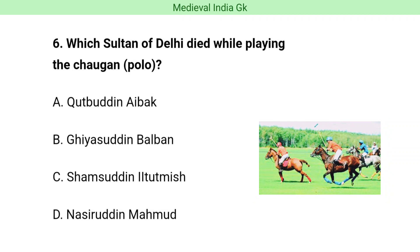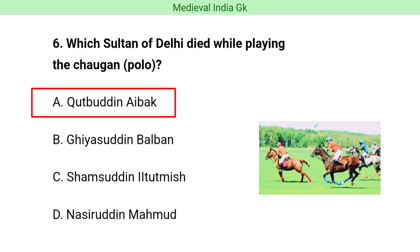Question number six. Which Sultan of Delhi died while playing the Chogan polo? The correct answer is option A, i.e. Qutubuddin Aibak.